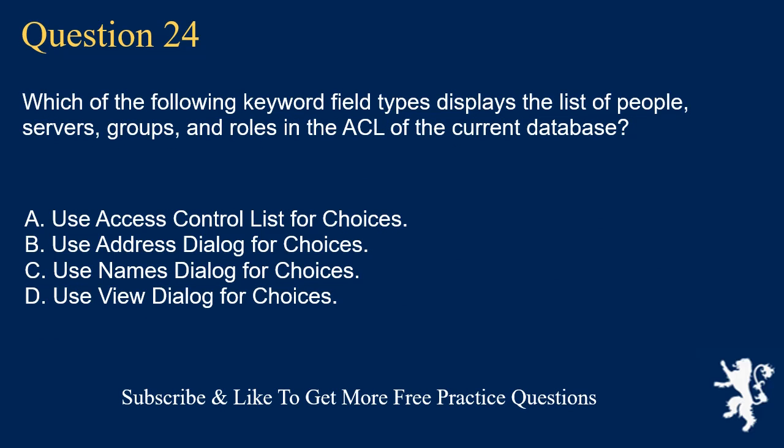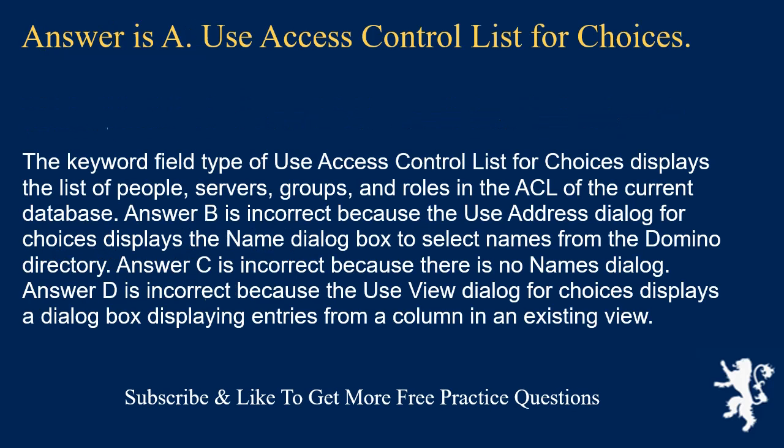Question 24. Which keyword field type displays the list of people, servers, groups, and roles in the ACL of the current database? Use access control list for choices. Use address dialog for choices. Use names dialog for choices. Use view dialog for choices. Answer is A: Use access control list for choices. This keyword field type displays the list of people, servers, groups, and roles in the ACL of the current database. Answer B is incorrect because use address dialog for choices displays the name dialog box to select names from the Domino directory. Answer C is incorrect because there is no names dialog. Answer D is incorrect because use view dialog for choices displays entries from a column in an existing view.